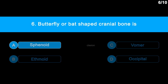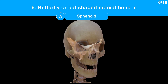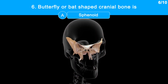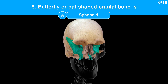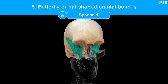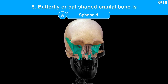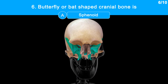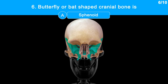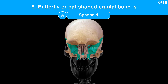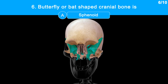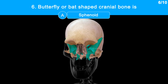The correct answer is Option A: Sphenoid. Sphenoid bone forms the base of the cranium. It has a body and two pairs of broad lateral wings, so it looks like a butterfly or bat. It is called the keystone of the cranial floor since it is in contact with all of the other cranial bones.